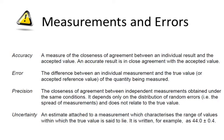Measurements and Errors. Accuracy: A measurement of the closeness of agreement between an individual result and the accepted value. An accurate result is in close agreement with the accepted value.